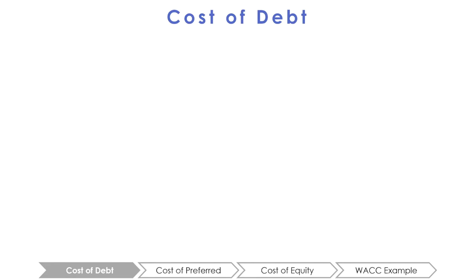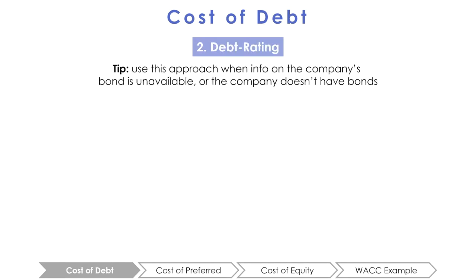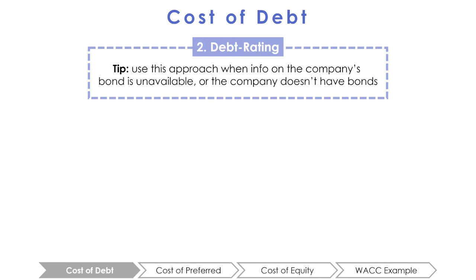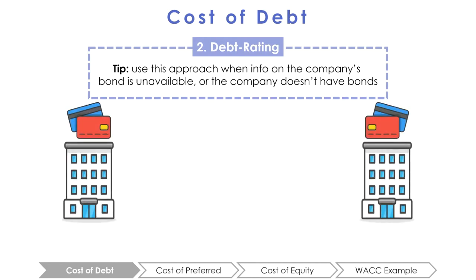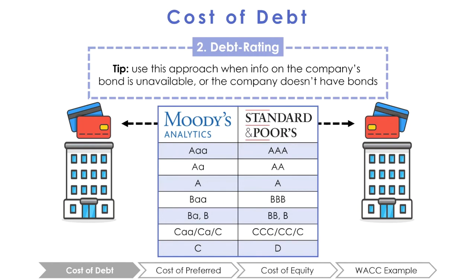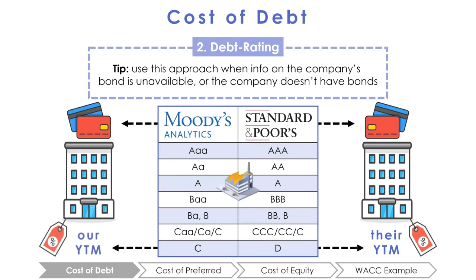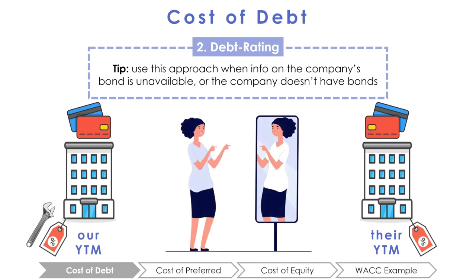The other approach is the debt rating approach. This method is used when information on the company's bonds is not available or not applicable. In this case, we find a comparable company that has the same credit rating. There are many credit rating agencies, such as Moody's, Standard & Poor's, and Fitch Group, who score a company's bonds to indicate how risky the firm's debt is. We use the YTM of that company's bond with a similar term to maturity to estimate the cost of debt, making any necessary adjustments for differences between companies.